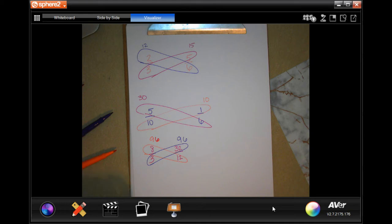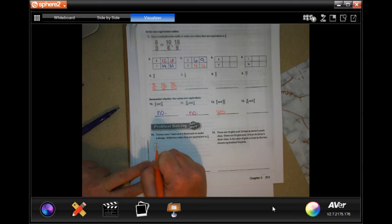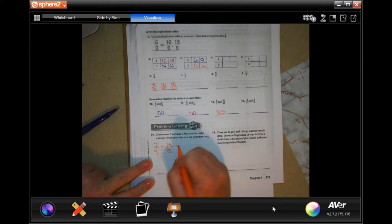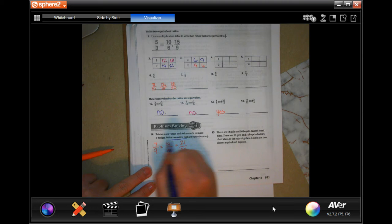Tristan uses 7 stars and 9 diamonds to make a design. Write two ratios that are equivalent to 7, 9. So we're just doing exactly what we did in the first one. 7 over 9, well if we multiply 7 by 2 we get 14, if we multiply 9 by 2 we get 18. If we multiply 7 by 3 we get 21, if we multiply 9 times 3 we get 27. So those are your two equivalents.